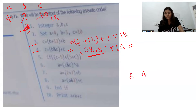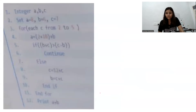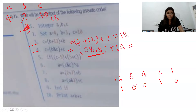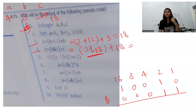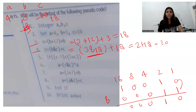Converting 18 to binary using 16-8-4-2-1: 16 plus 2 gives 18, so binary is 1 0 0 1 0. Converting 3 to binary: 2 plus 1, so 0 0 0 1 1. Taking AND: only the second bit from right matches giving binary 0 0 0 1 0, which is 2. So 2 plus 18 gives c equals 20.